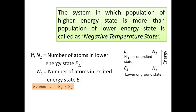If N1 is the number of atoms or electrons in the lower energy state, that is the ground state, and N2 is the number of atoms or electrons in the excited state, then the system in which the population of the high energy state is more than the population of the lower energy state is called the negative temperature state. Normally at equilibrium, N1 is always greater than N2, but for stimulated emission we need N2 to be greater than N1.